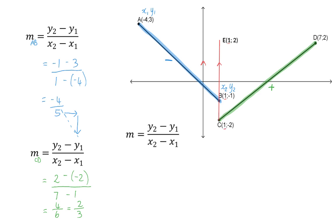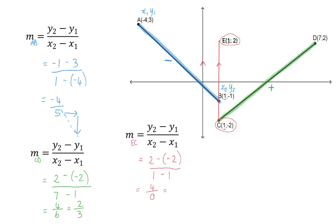So using the formula again, I'm going to determine the gradient of line EC by using points E and C. This means I will substitute 2 and subtract minus 2 and divide that by 1 minus 1. Simplifying this will give me a denominator of 0, and that means the gradient is undefined.